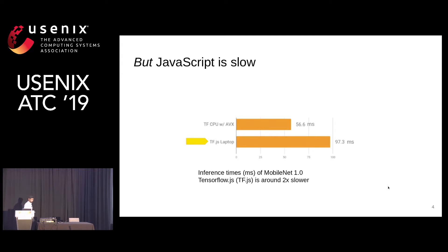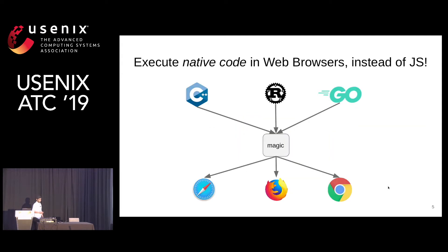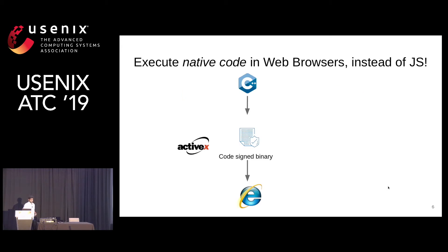So what's the solution? One solution that has been explored in the past is to actually execute the native code directly inside the browser instead of JavaScript. One of the earliest technologies to do that was ActiveX. It would take C++ code, compile it down to a native binary, which can be executed in Internet Explorer. So it was fast, but it was not secure and not portable.